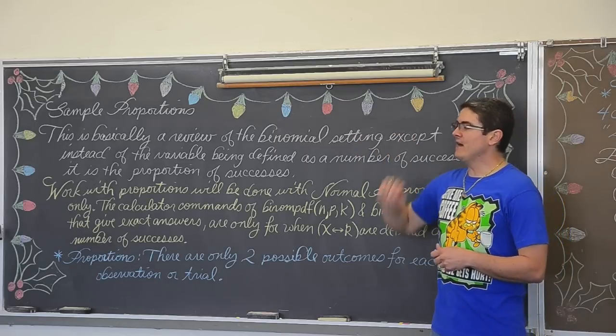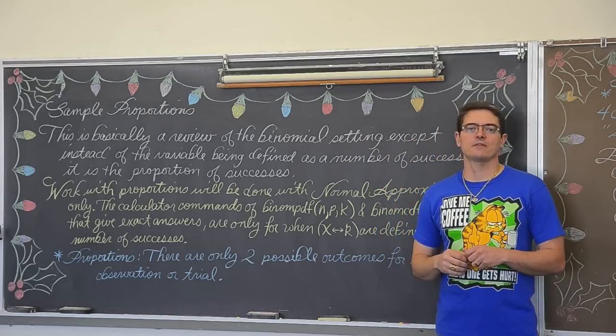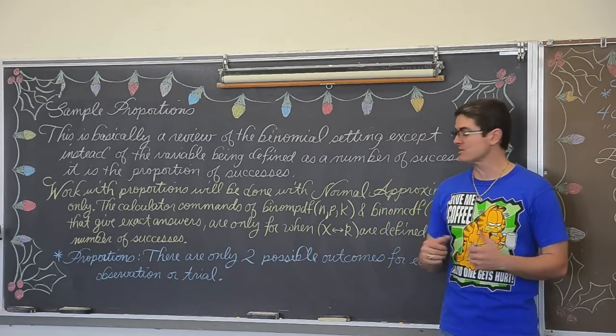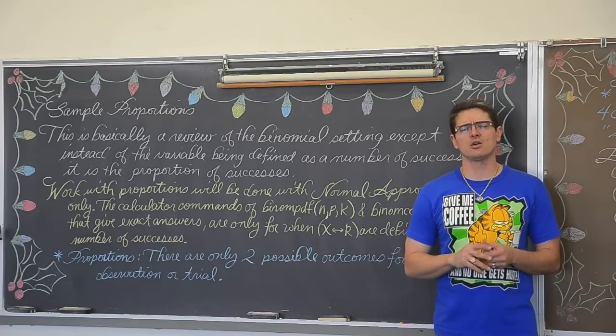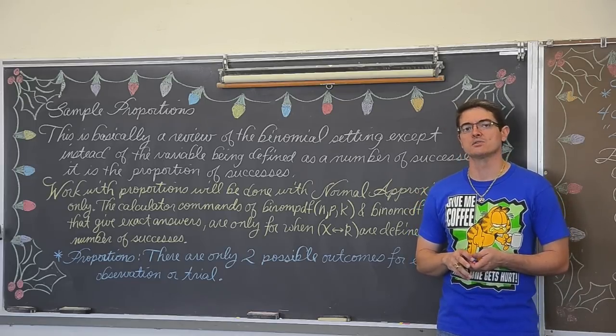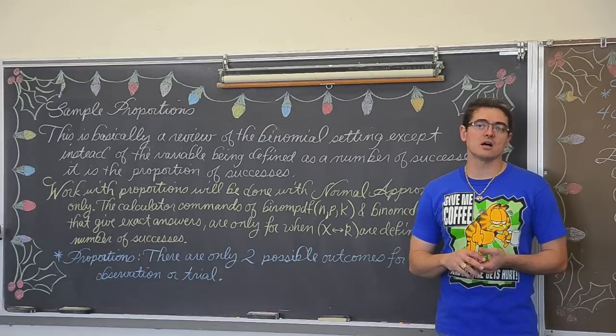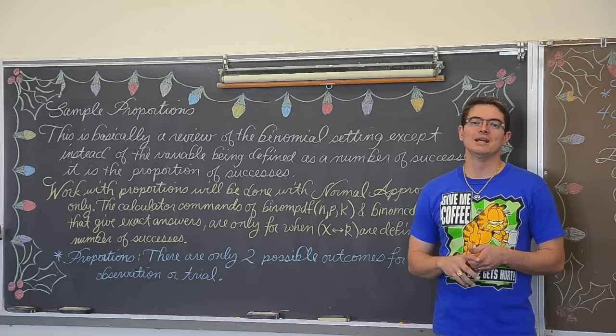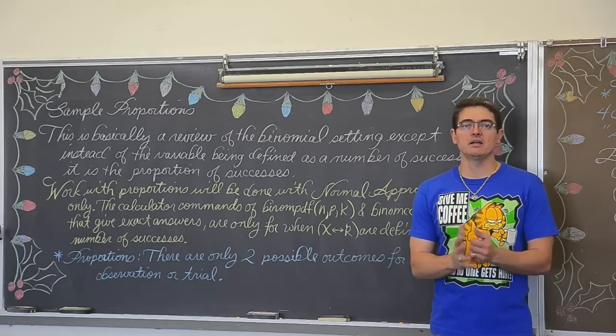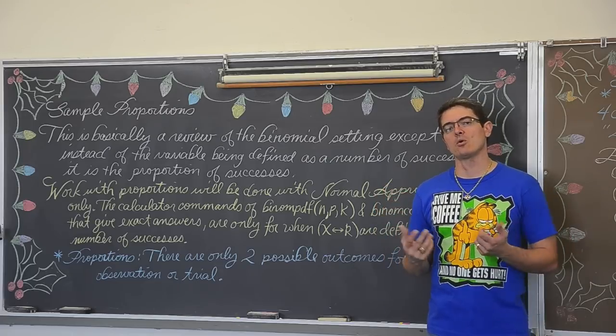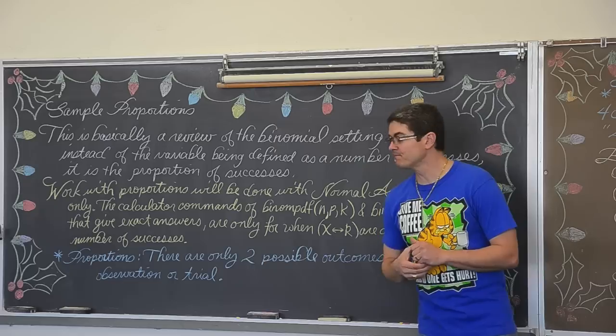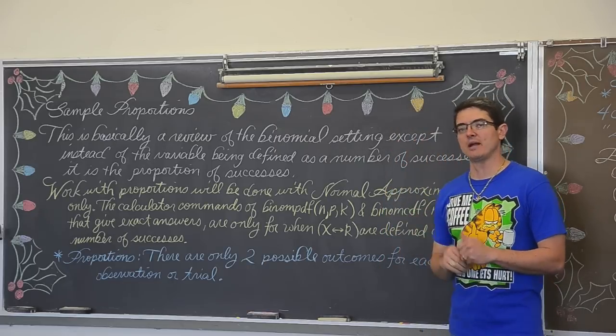Now, we have learned something called the binomial setting and learned how to calculate binomial counts. And we have learned something called normal approximation with binomial counts. Well, we are now going to start talking about sample proportions which is the binomial setting except instead of the variable being reported as the number of counts, it is going to be the percent. So we are definitely on the downhill slope now.